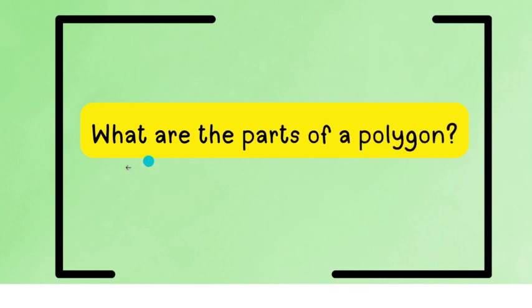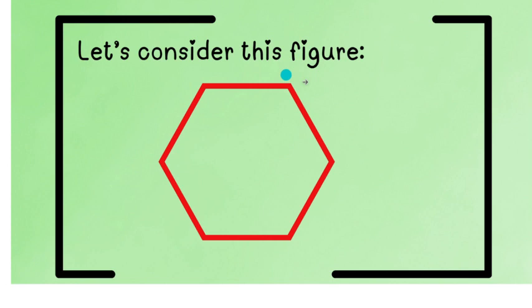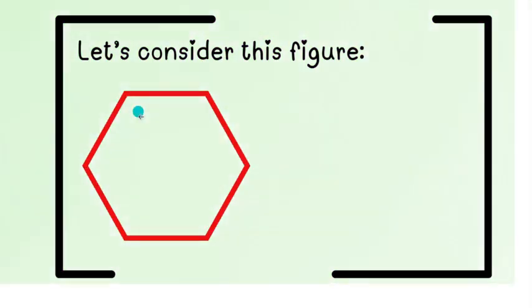Now let's go to the parts of a polygon. What are the different parts of a polygon? So, let's consider this figure. We have a six-sided figure and we call this hexagon. From the word hex, meaning six. So, therefore, this is a hexagon.